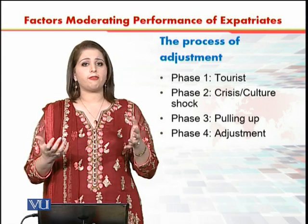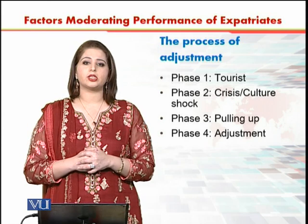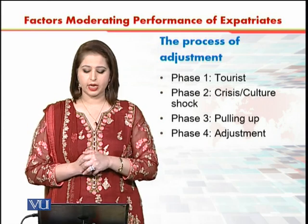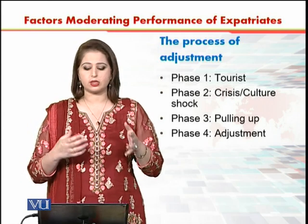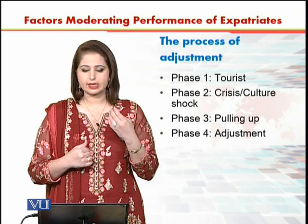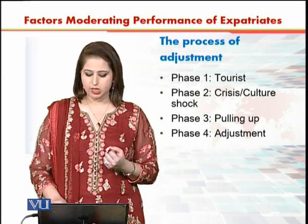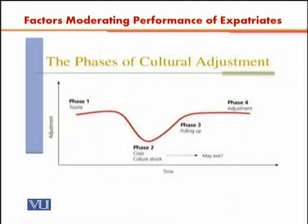There are four phases of cultural adjustment: phase one is the Tourist phase, phase two is Crisis, phase three is Pulling Up, and phase four is Adjustment. Let's look at the model showing how the adjustment process changes over these different phases.